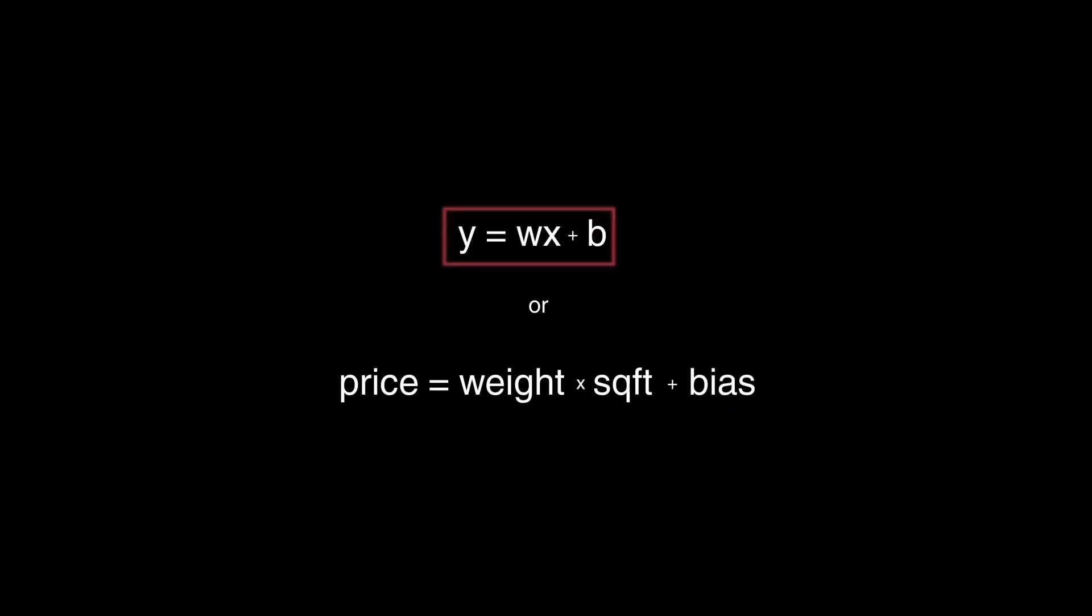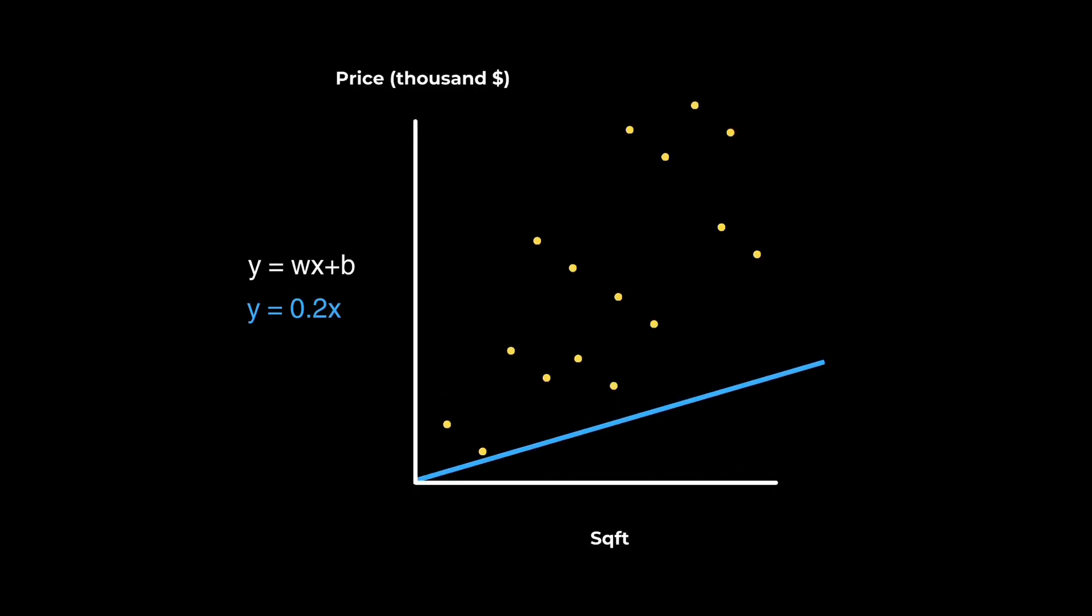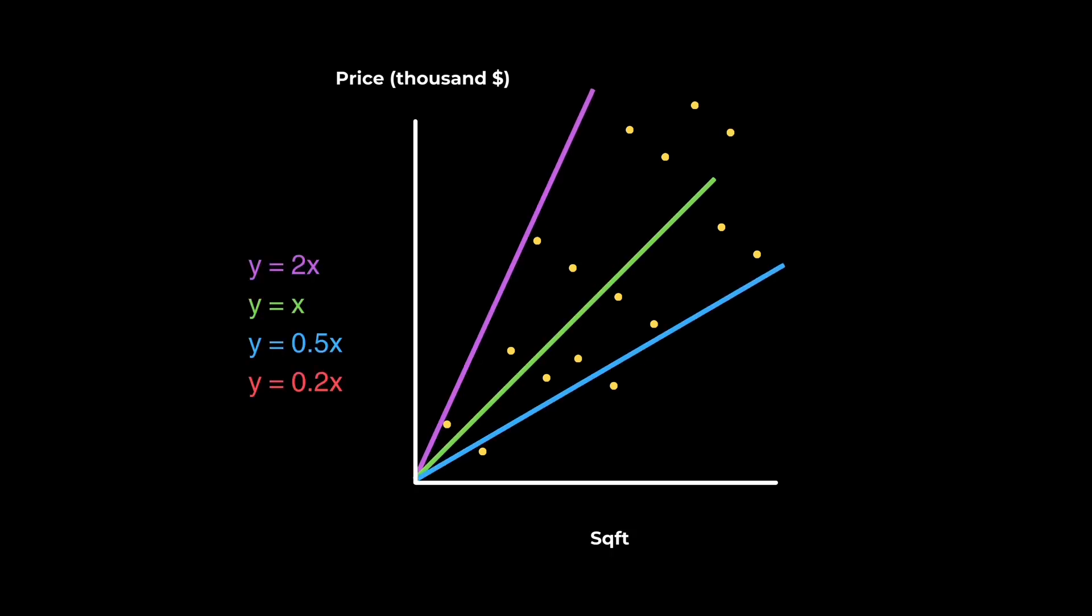Remember, our goal is to find the equation that most accurately predicts an output when we give it an input. For our simple example, we only have two variables to play with. Let's call them w and b. These variables are often referred to as weights and biases. By adjusting these parameters, we can change the shape of our line and hopefully get it to be as accurate as possible. For now, let's just say b equals 0 and ignore it. In this case, every value for w would give us a different line, and each line gives us a different cost.